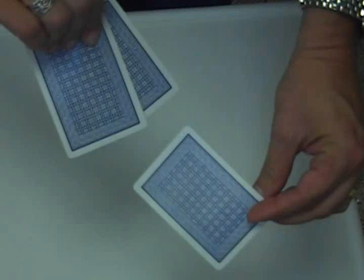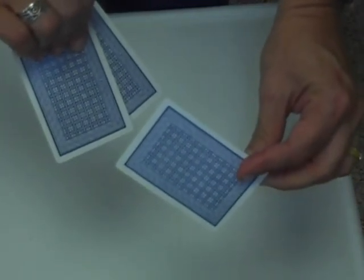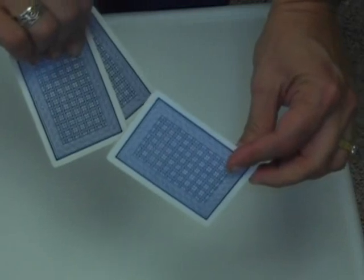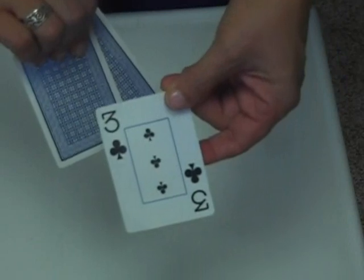Then he's going to turn it over and show that card to the rest of the class. And what color should that card be? Red, right? But it's not. It's black. How did that happen? We only have three cards.